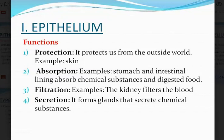Filtration occurs in the kidneys, where we have filtration of the blood into the glomerulus. Then secretion — epithelial tissue can form glands that secrete chemical substances. Think about the endocrine system, where epithelial tissues secrete hormones, or the exocrine system — for example, the salivary gland, pancreas, and so on.